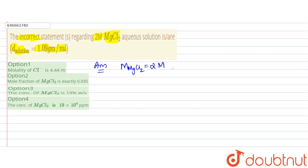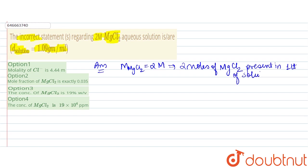The molarity of MgCl₂ is given as 2 molar. Molarity is number of moles of solute divided by volume of solution. Since it is 2 molar, one liter of solution contains 2 moles of MgCl₂.